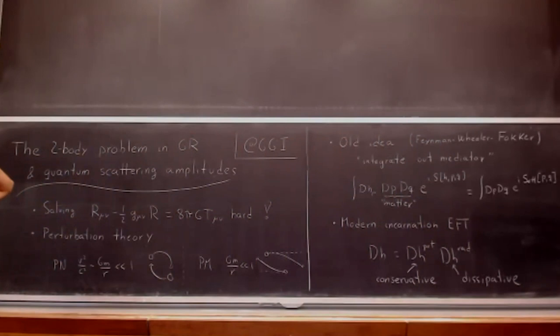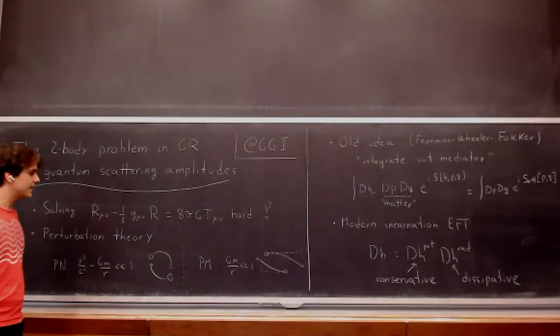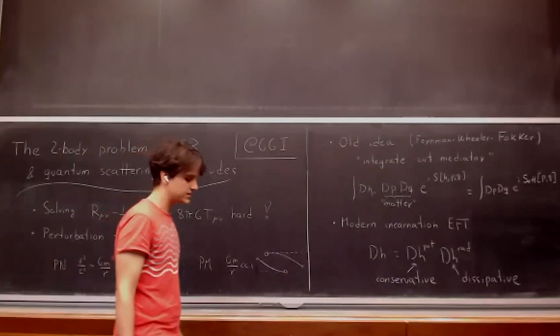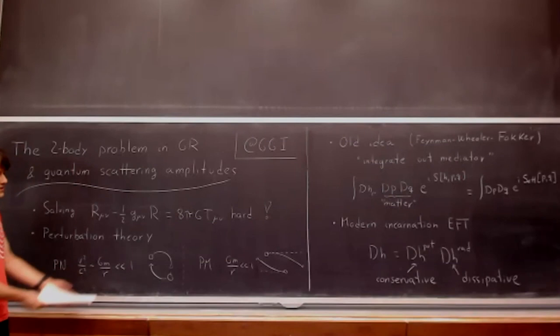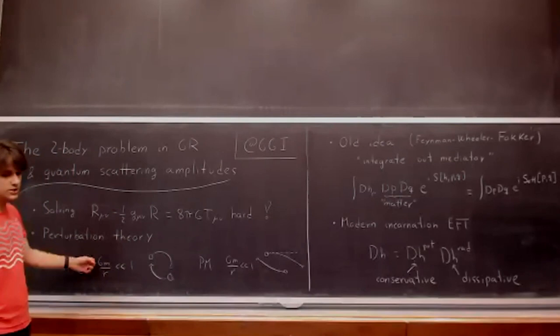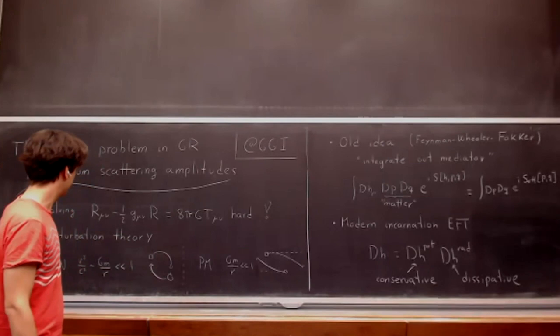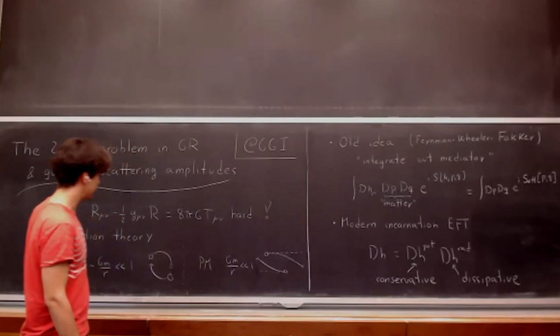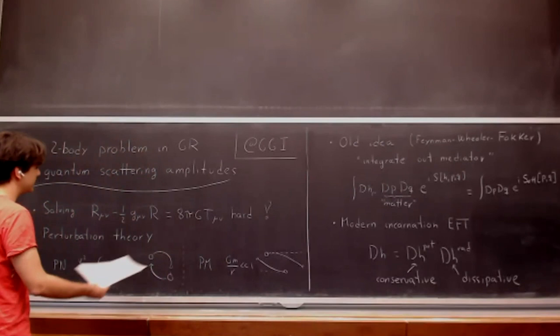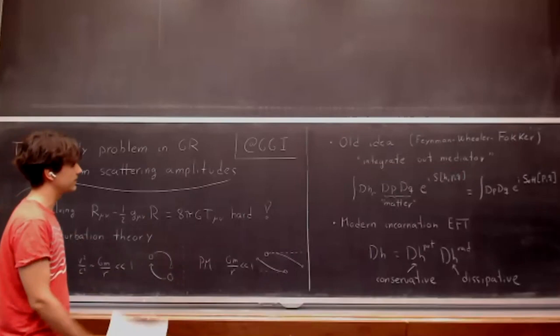As motivation, solving the Einstein field equations is hard, so we resort to perturbative approaches. There are two perturbative expansions: the post-Newtonian expansion for bound systems — expanding in both velocities and GM/r — and the post-Minkowskian expansion for scattering, valid to all orders in velocity but with GM/r as the small parameter. The goal is to solve this using field theory methods from scattering amplitudes.